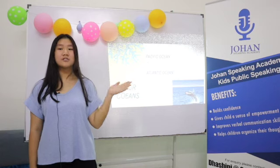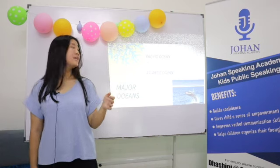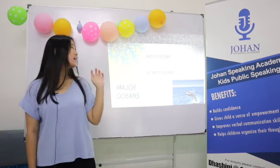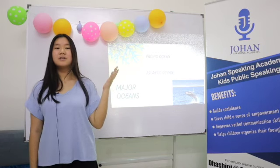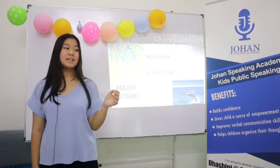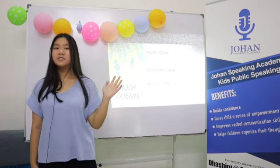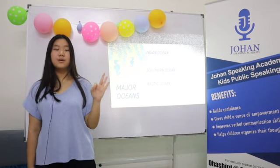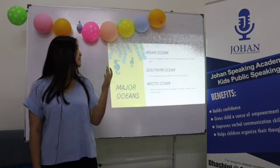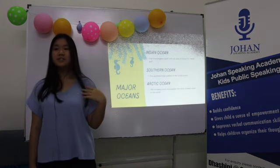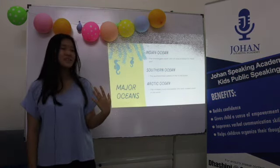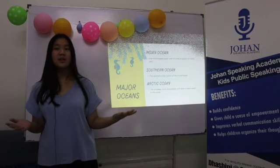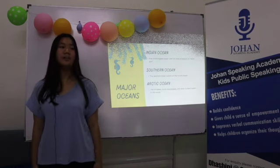The Pacific Ocean is the largest ocean in the world. The Atlantic Ocean is the second largest ocean, covering about 25% of Earth's surface. The Indian Ocean is the third largest ocean in the world with an area of about 70 million kilometers square. The Southern Ocean is the southernmost waters of the world ocean. The Arctic Ocean is the smallest and least studied ocean in our world.